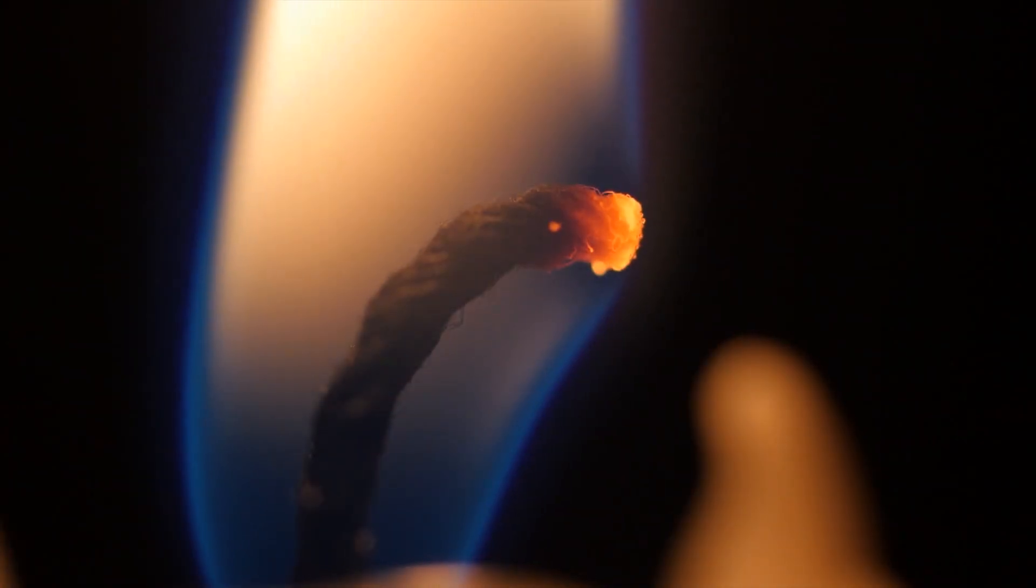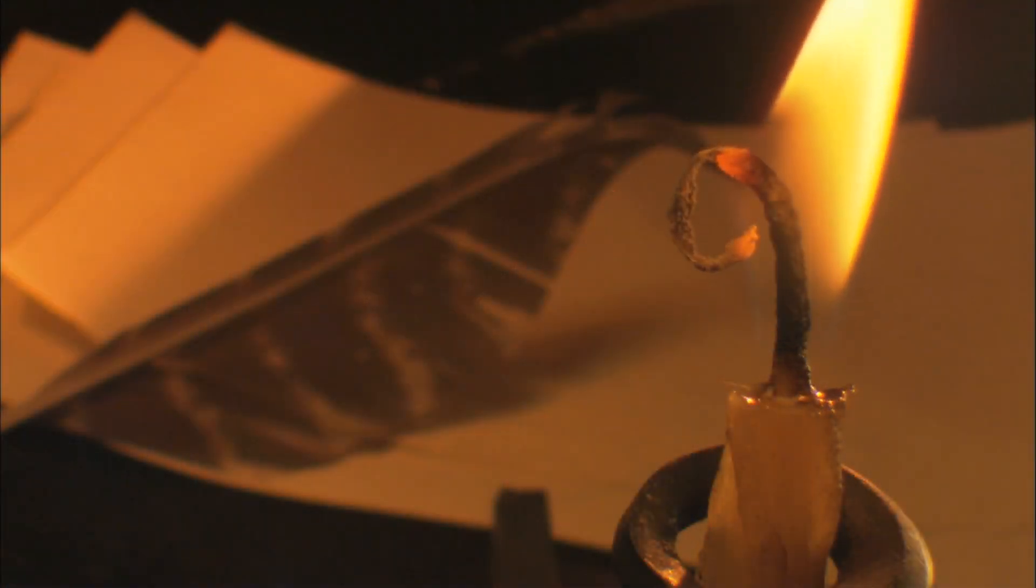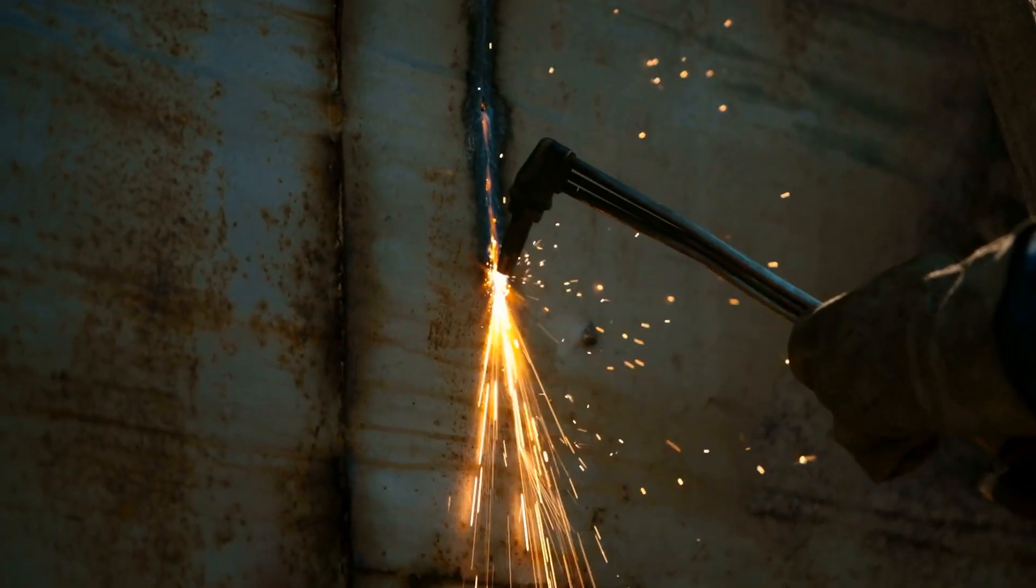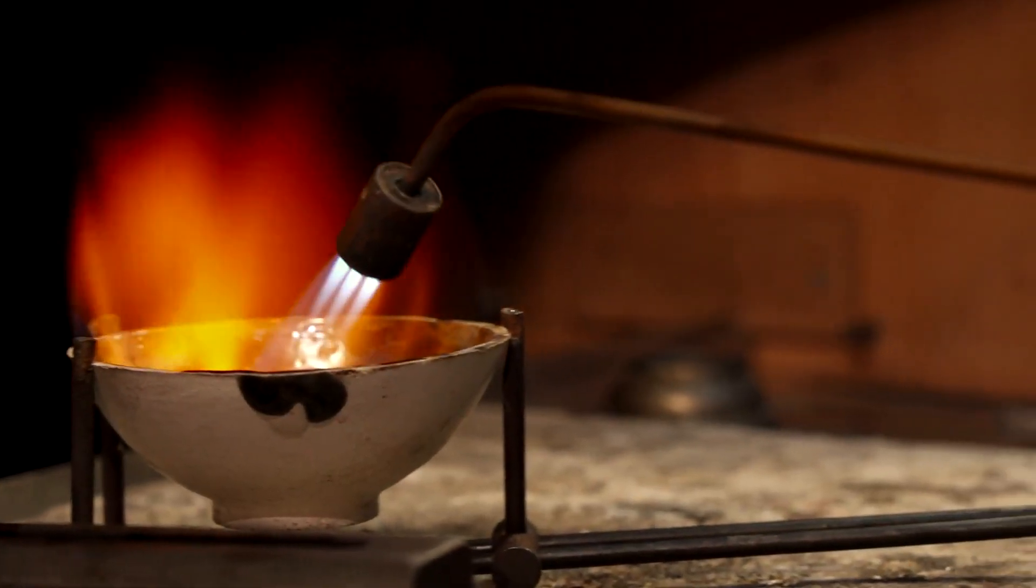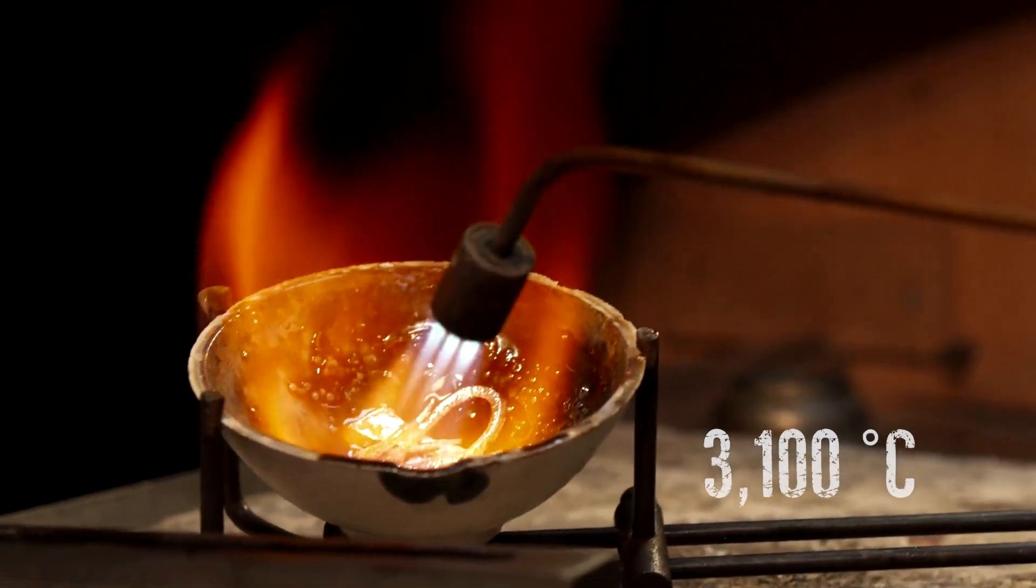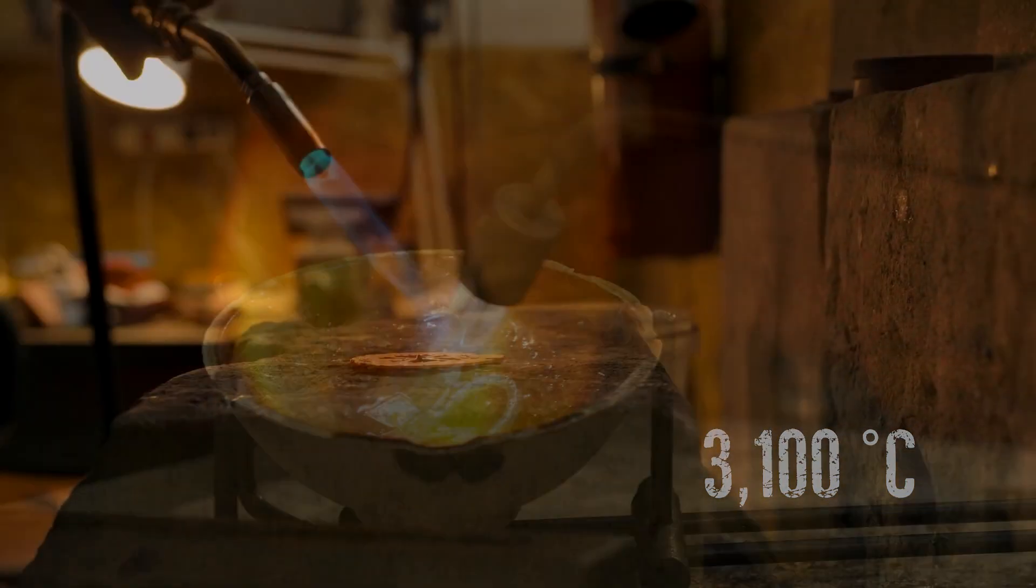The colors we see in flames, like red, orange, and yellow, are emitted by hot particles of fuel, not by plasma. However, certain flames, such as those from burning acetylene, can reach temperatures as high as 3100 degrees Celsius.